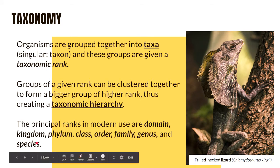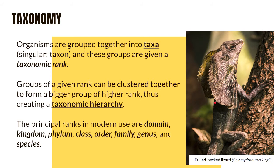By the way, the word is pronounced "species," and it is always written in plural form — always with an S at the end — even if you are talking about just one group of organisms. This is an image of a frilled-necked lizard with the scientific name Chlamydosaurus kingi.